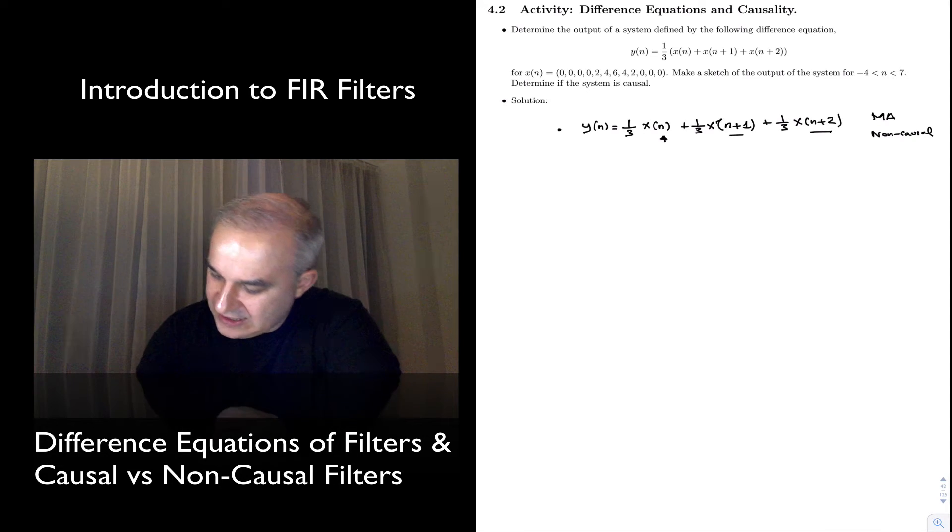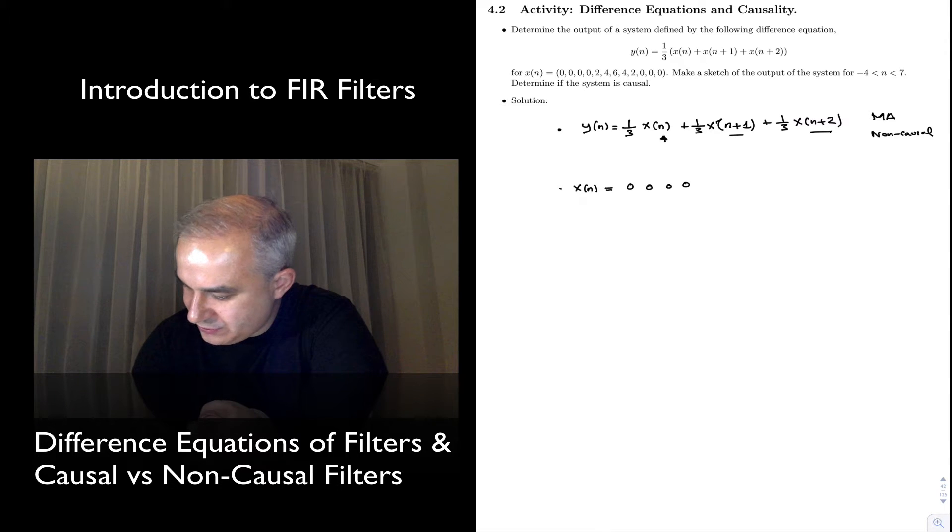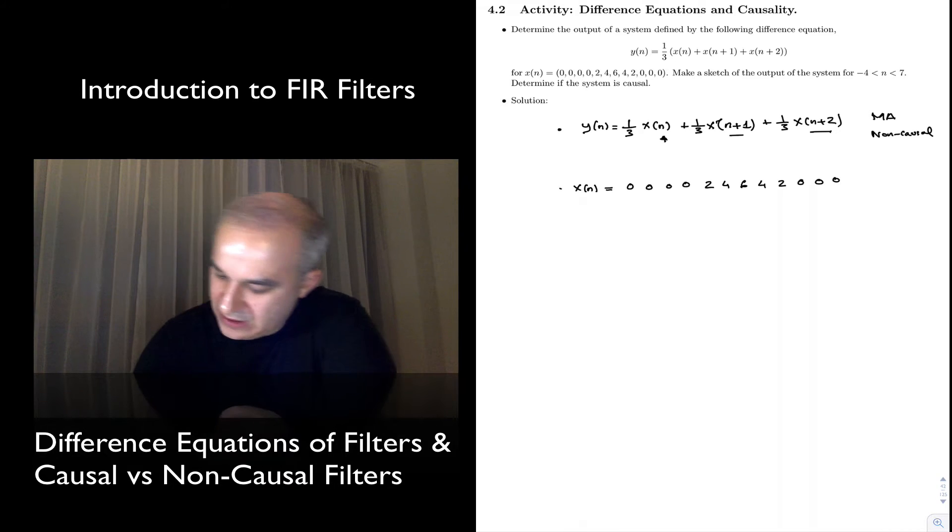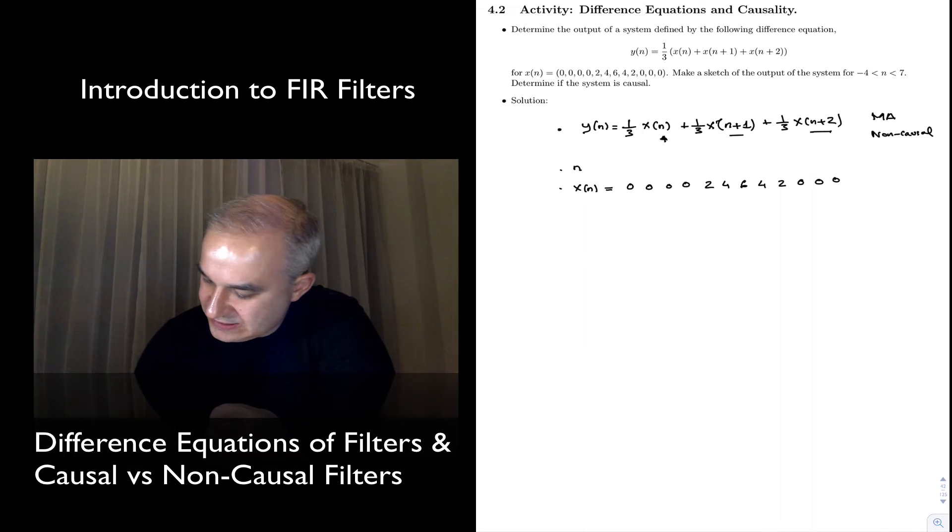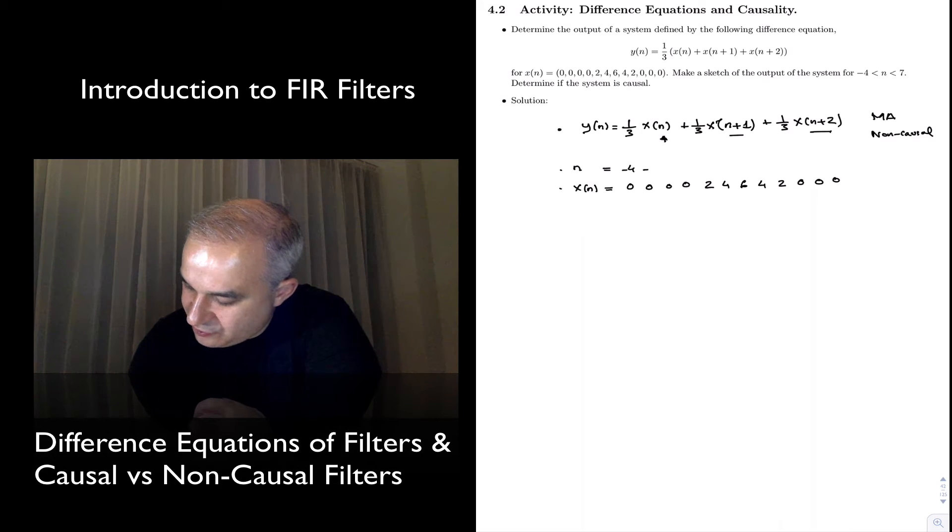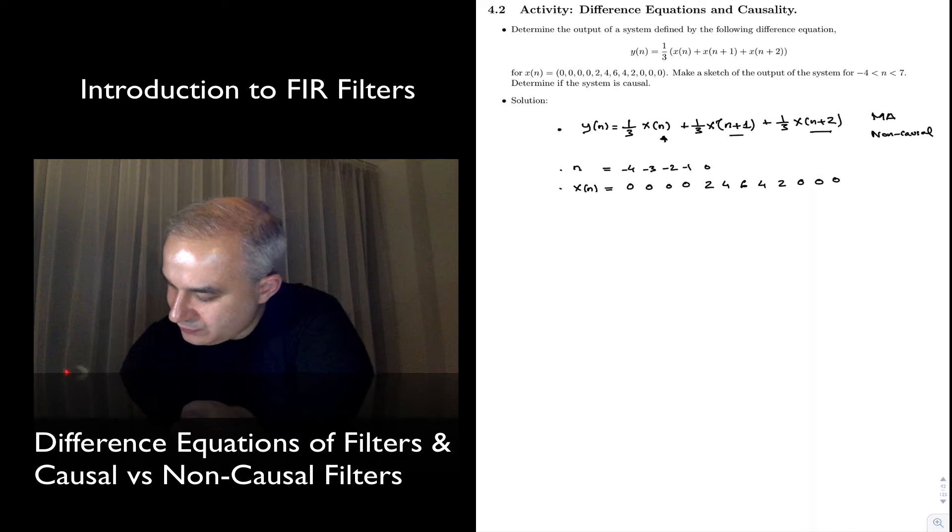So, with that, let's see. We have x of n. We are given that this is 0, 0, 0, 0, 2, 4, 6, 4, 2, 0, 0, 0. Our n indices, to know where these samples actually go, is minus 4, minus 3, minus 2, minus 1, 0, 1, 2, 3, 4, 5, 6, 7.